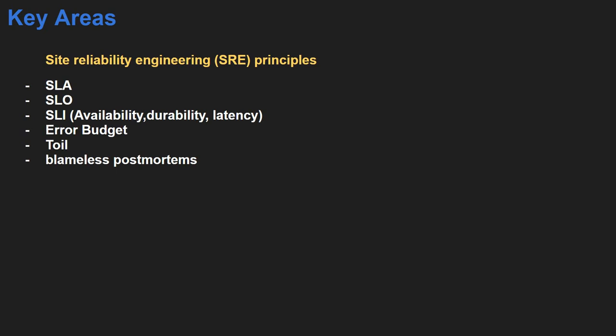Then blameless postmortem: this is about incident management. Once an incident or outage happens, you prepare a root cause analysis and a complete postmortem report, but this postmortem must be blameless — you should not mention any person's name as responsible for the outage. For example, if I perform a deployment and something goes wrong — an operational or technical mistake causing an outage — my name should not appear in any report causing blame on me. It should be a completely blameless postmortem.